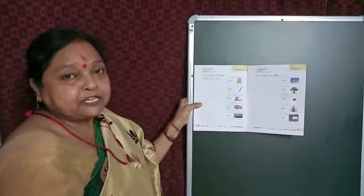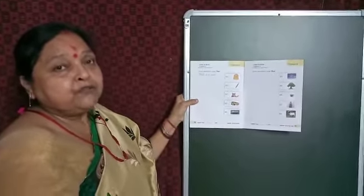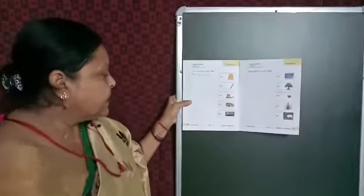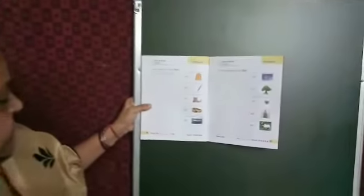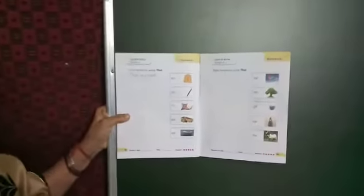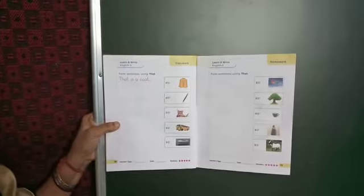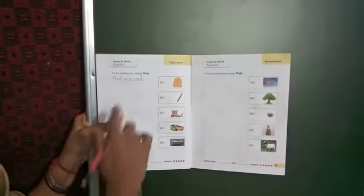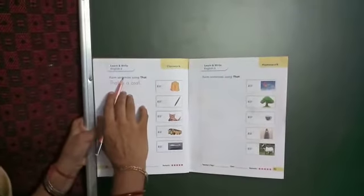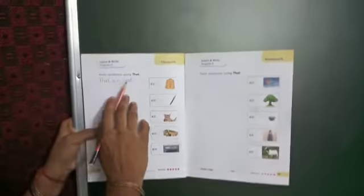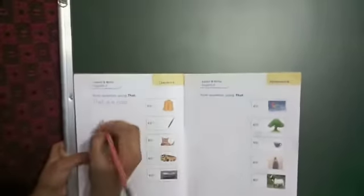In our English practice book 3 we do page number 80, 90 and 91. In page number 90, form sentences using that. First picture: that is a coat.